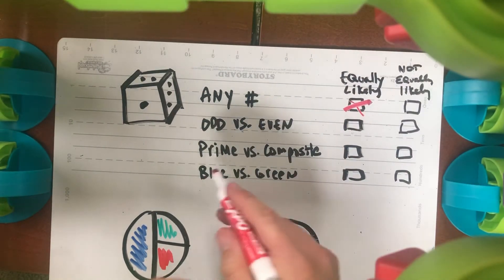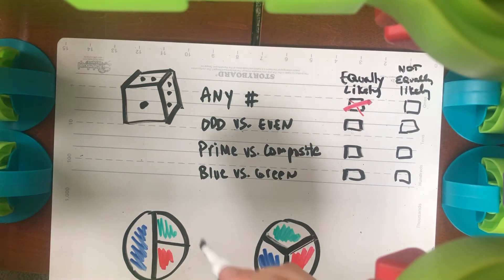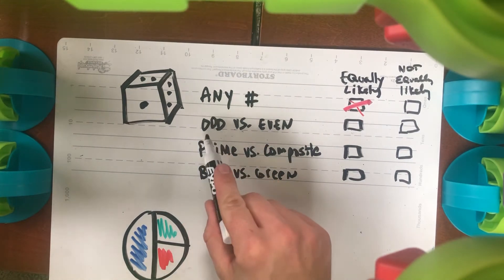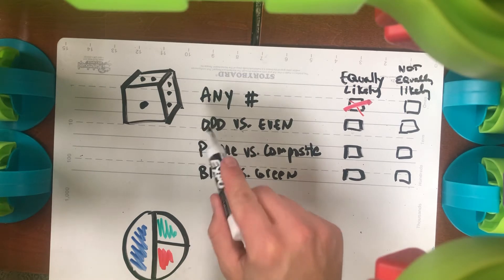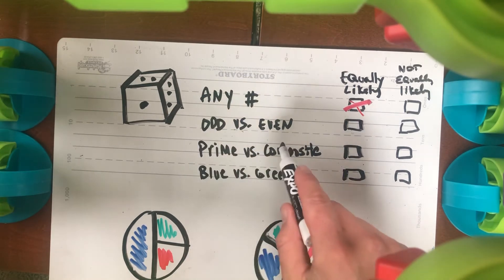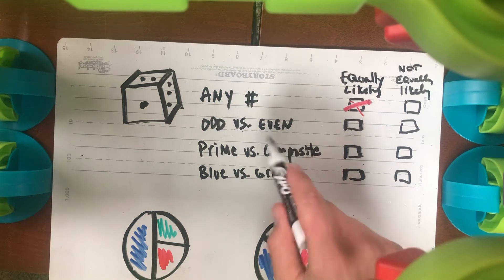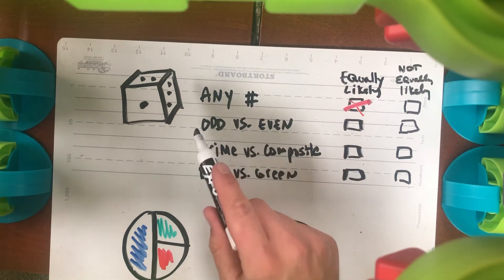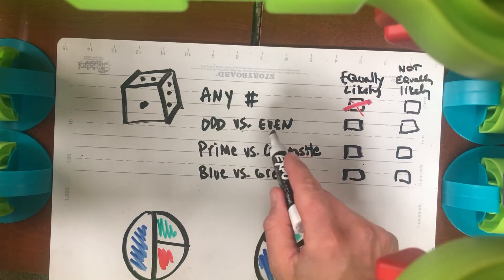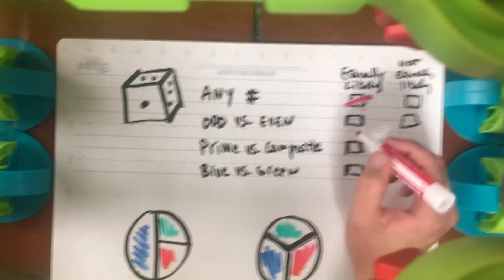How about an odd versus an even on a single roll? What's the probability of getting an odd number? Well, there's one, three, and five — so there's three of them. What's the probability of getting an even number? Two, four, and six — there's three of them. So three out of six is 50 percent, and three out of six is 50 percent. So yes, those events are equally likely.